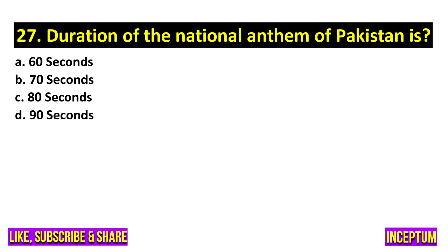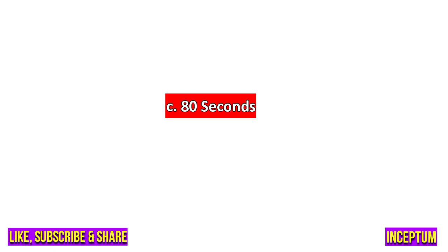Question number 27. Duration of the national anthem of Pakistan is? In the options: 60 seconds, 70 seconds, 80 seconds, 90 seconds. And the right one is option C, 80 seconds.